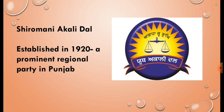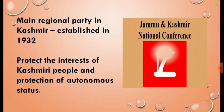The next party is Shiromani Akali Dal, established in 1920 — a prominent regional party in Punjab. Its main objective is cultivating religious and regional identity, and it has assumed power in Punjab for many years. Next is the Jammu and Kashmir National Conference, the main regional party in Kashmir, established in 1932. It protects the interests of Kashmiri people and the protection of autonomous status.